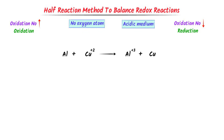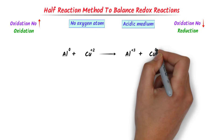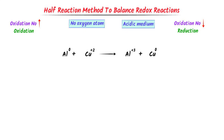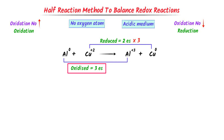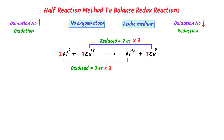Now consider this redox reaction. The oxidation state of aluminium in free state is 0 and that of copper is also 0. The oxidation state of aluminium increases from 0 to positive 3; hence aluminium loses 3 electrons. Secondly, the oxidation state of copper decreases from positive 2 to 0; hence copper gains 2 electrons. Now I use the trick — I cross-multiply the number of electrons. In oxidation there are 3 electrons, so I multiply reduction by 3 and put 3 with copper on both sides. In reduction there are 2 electrons, so I multiply oxidation by 2 and put 2 with aluminium on both sides.